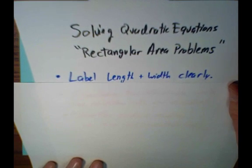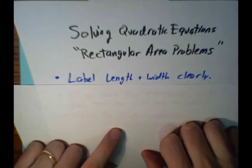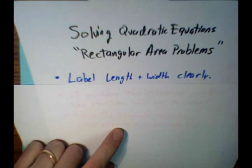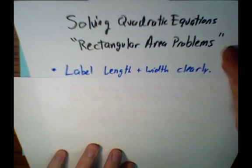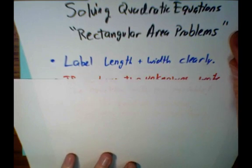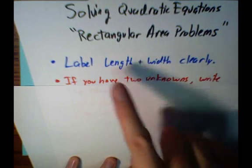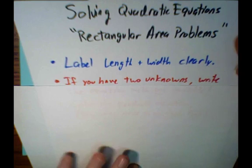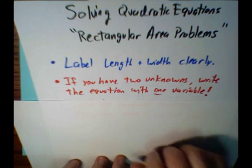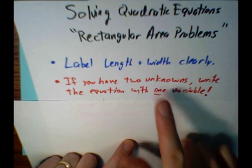To solve a rectangular area problem, you need to be very clear about your length and width. Make sure you label them clearly on your paper, on your notes. But unfortunately, if you have two unknowns, you really need the equation to only have one variable in it. And this is really important.